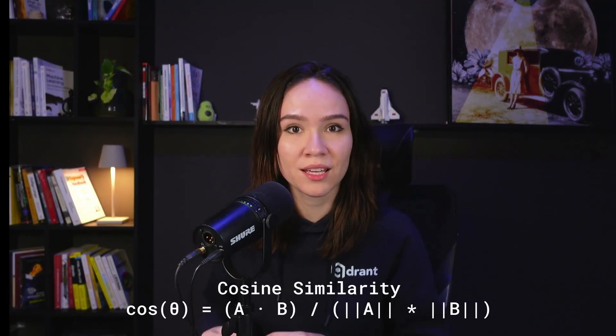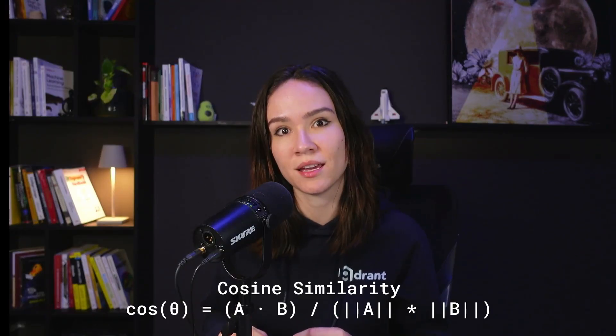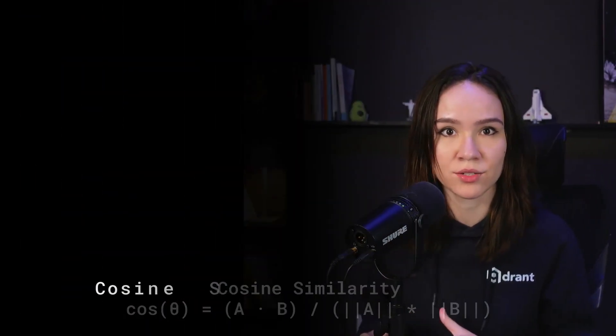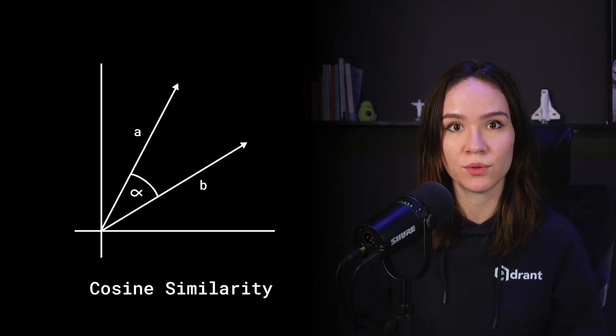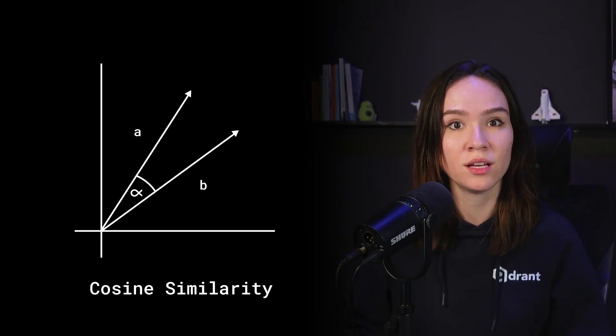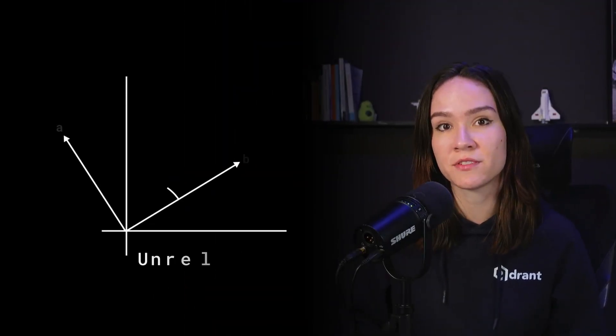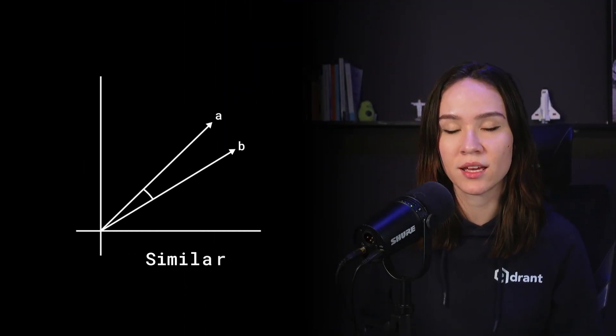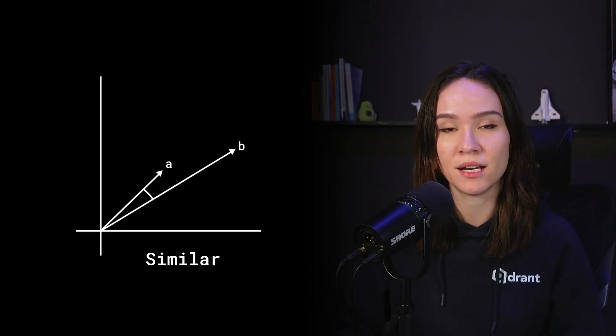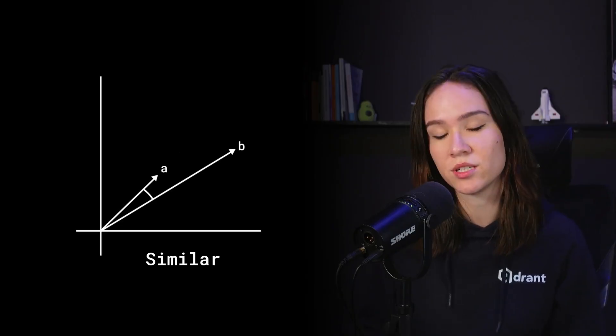Let's start with cosine similarity because it's one of the most used distance metrics. This one is all about direction. The formula is the dot product of the vector divided by the product of their magnitudes. The result is the cosine of the angle between the vectors — the smaller the angle, the higher the score. So if the vectors are aligned, even if they have different lengths, the cosine similarity will be close to one. This type of similarity is great when direction carries meaning, but the length of the vector does not.